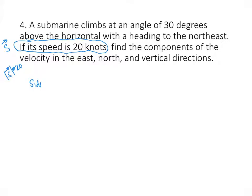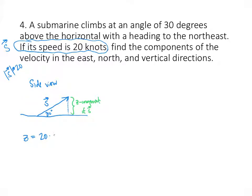It's easier to start with the 30-degree angle above the horizontal. Looking at a side view, the submarine goes up at 30 degrees, the vector s has length 20, and the vertical side of the triangle is the z-component of s. Using trigonometry, the z-component is 20 × sin(30°). Since sin(30°) = 1/2, the z-component is 10.